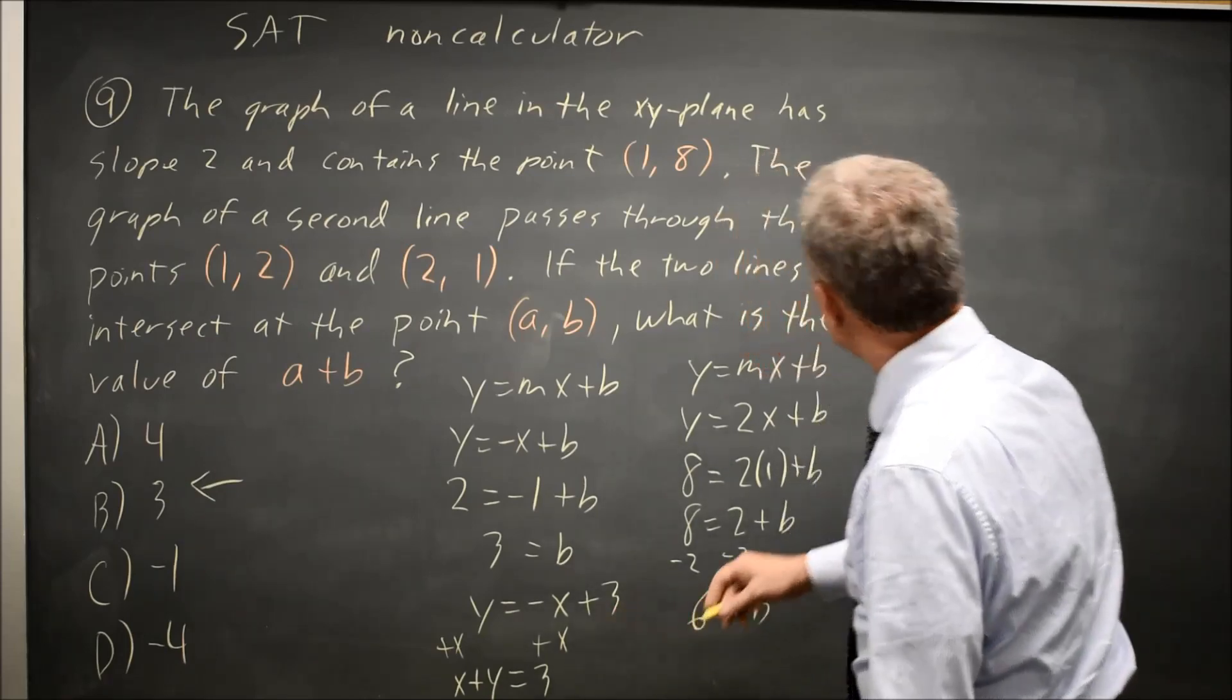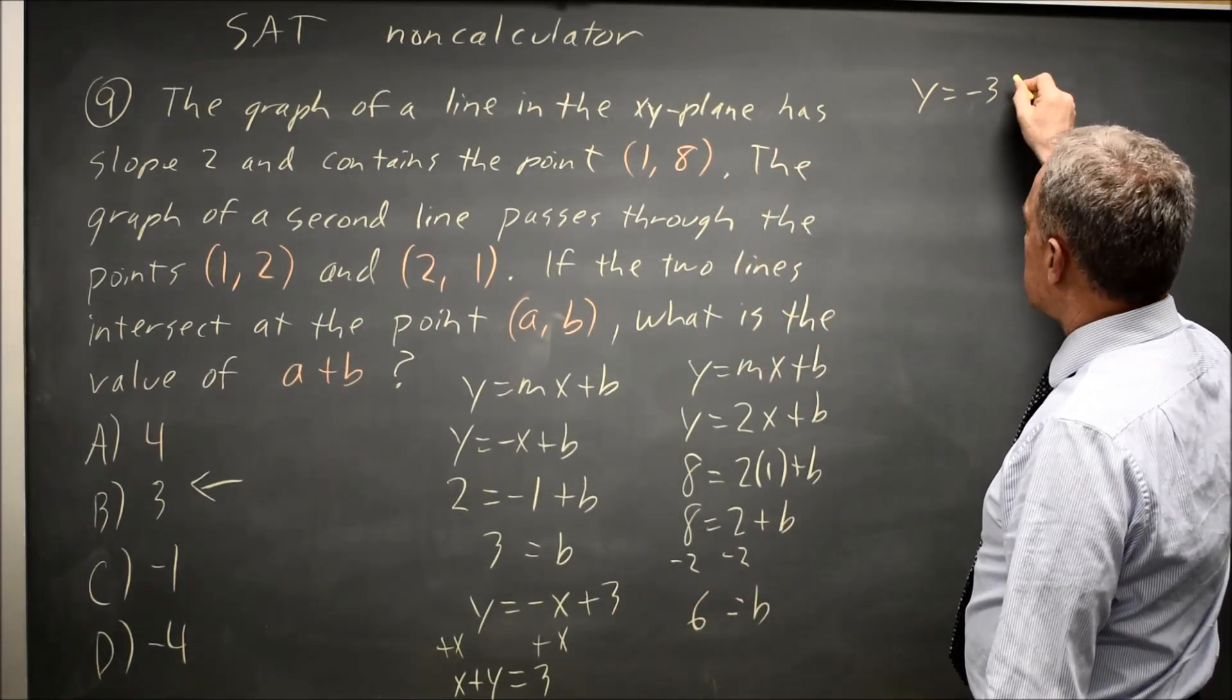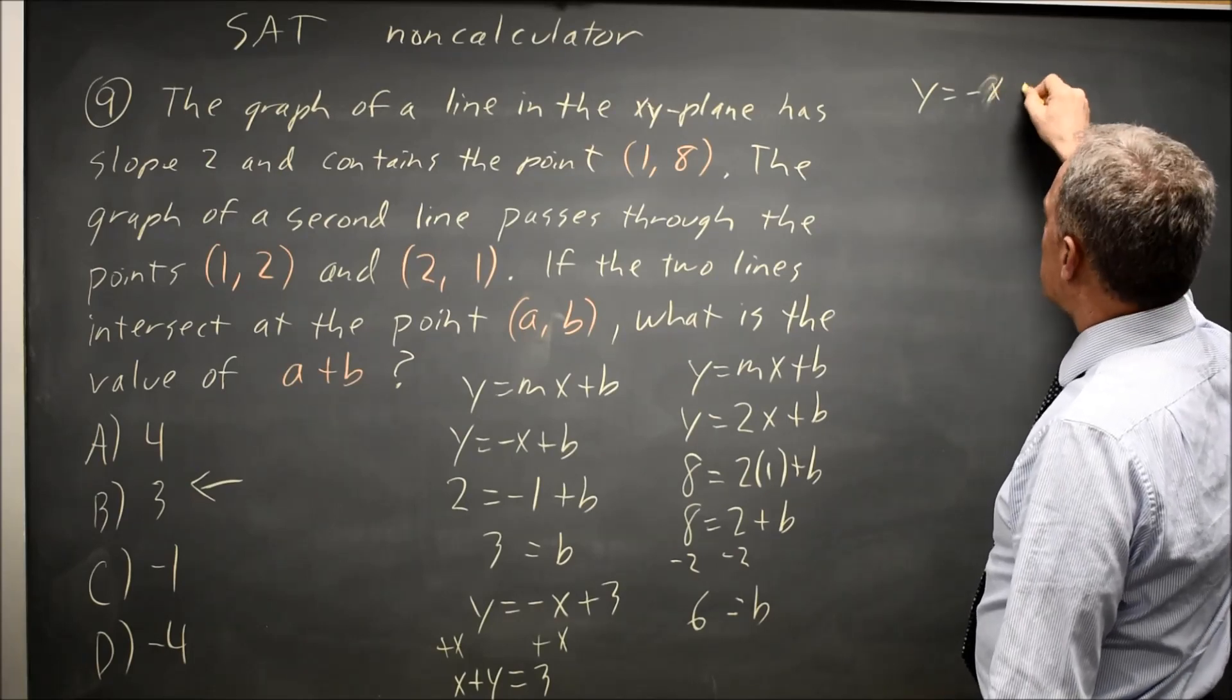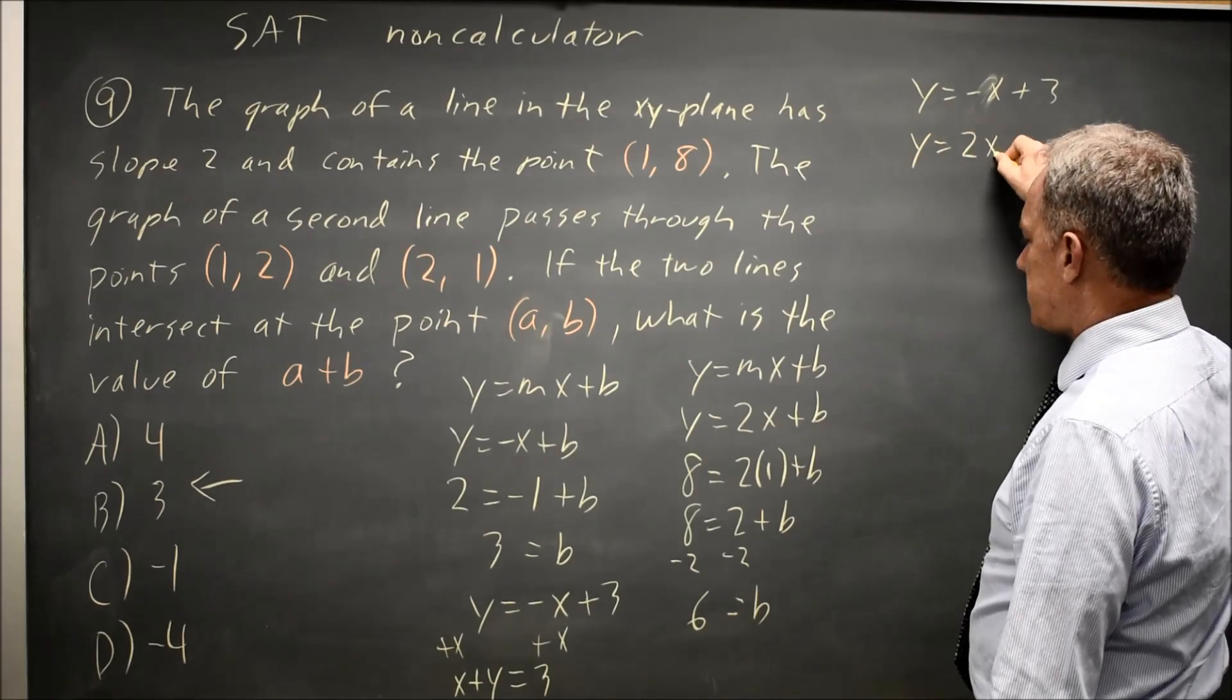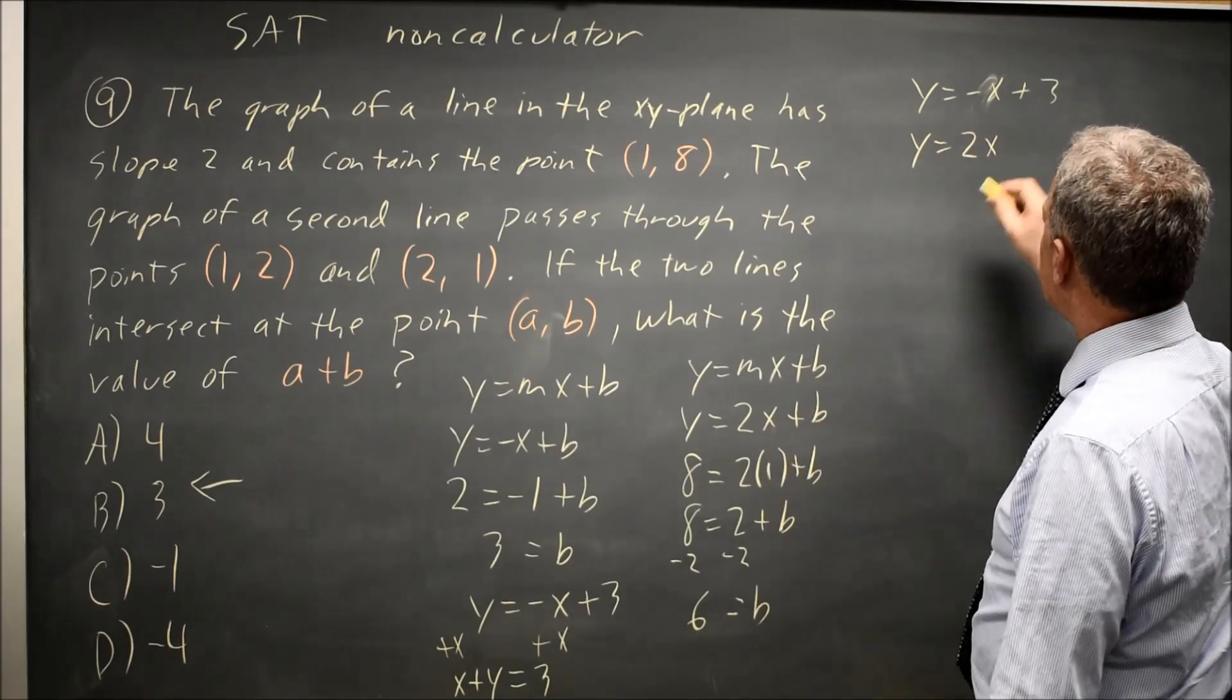So I have my first equation, y equals negative x plus 3. And my second equation, y equals 2x plus b, where b I found was 6.